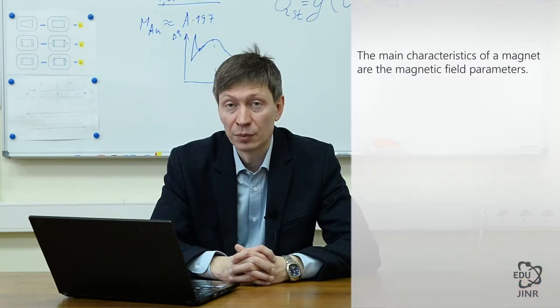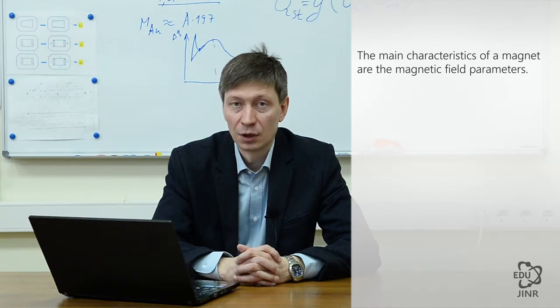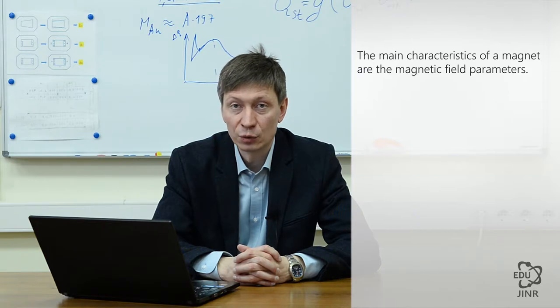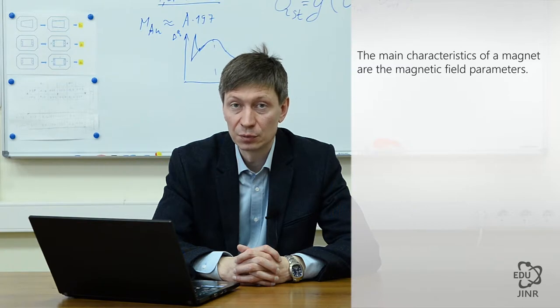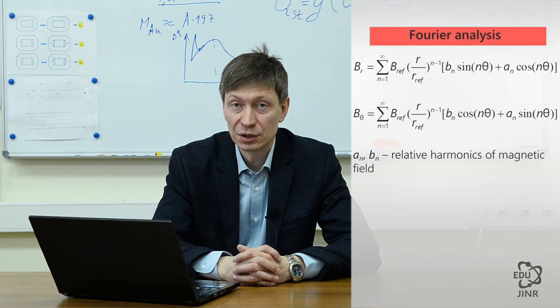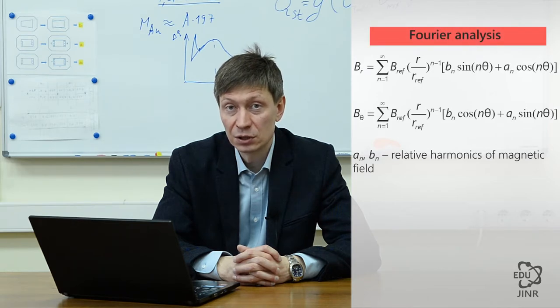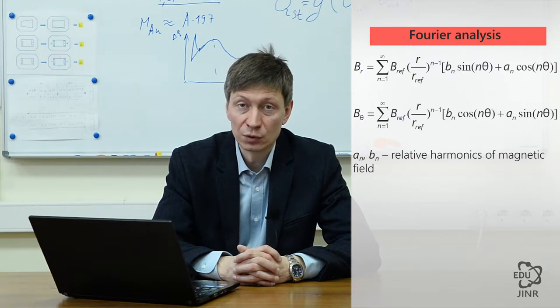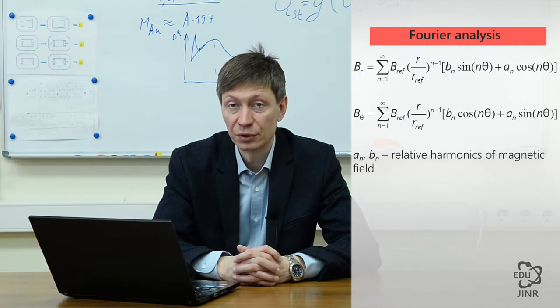From the name, it is understood that the magnetic field is the main characteristic of any magnet. The magnetic field of circular accelerators is measured in the area of the beam's span in the direction of its movement. In this manner, integral characteristics are measured — those experienced by the beam during circulation inside an accelerator. During the measurement and assessment of the fields of circular accelerator magnets, Fourier analysis is used.